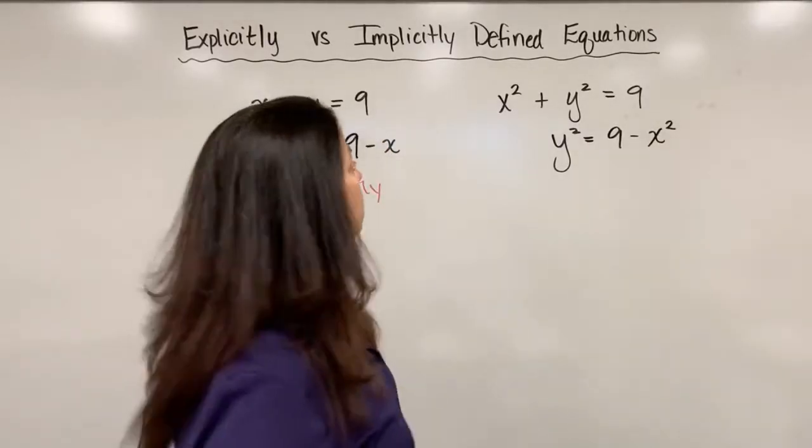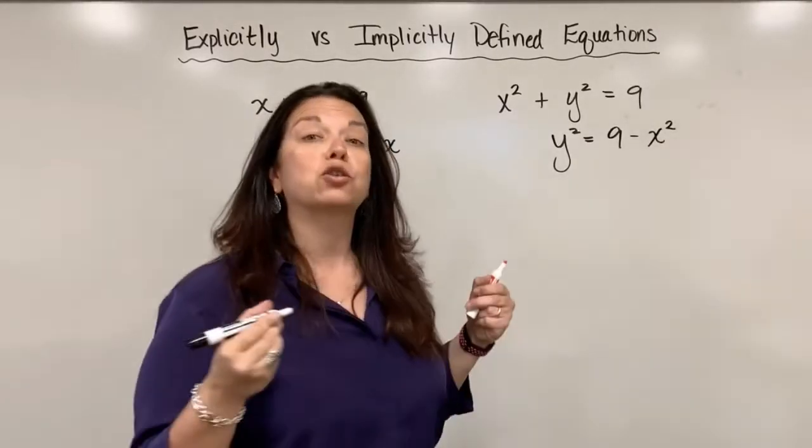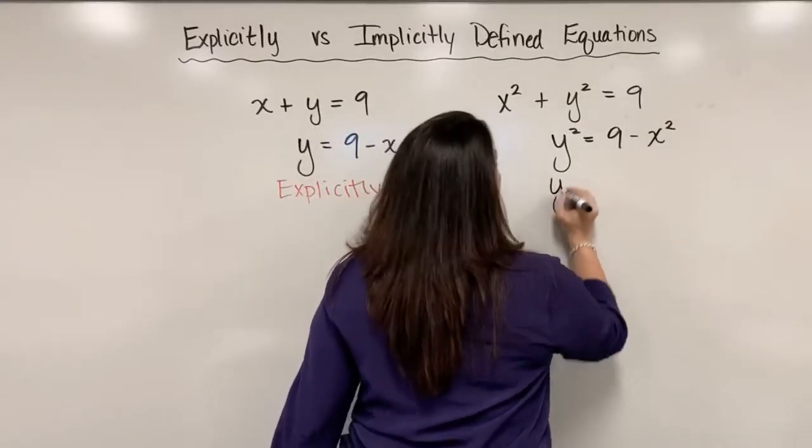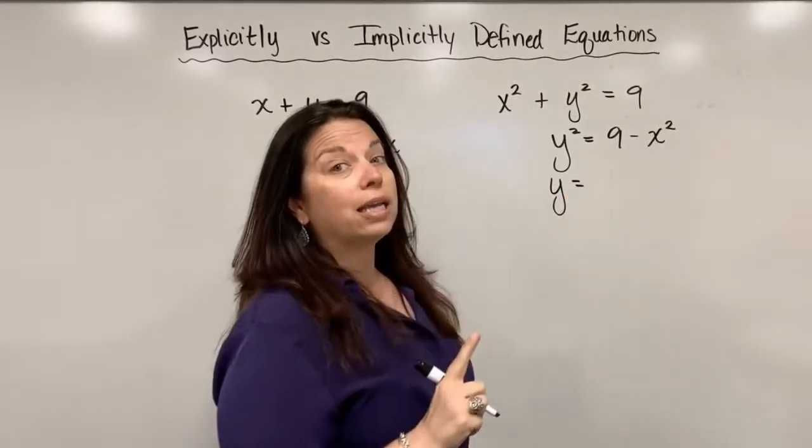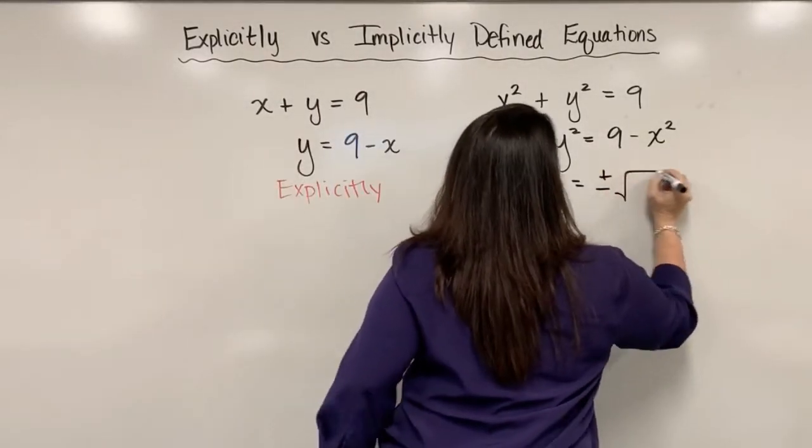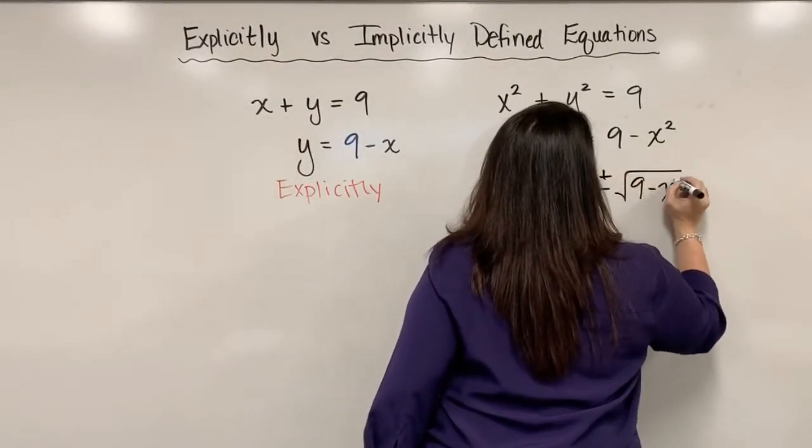And now to get y completely by itself, we would have to take the square root of both sides of the equation. And when I do, I end up with y equaling plus or minus square root of nine minus x squared.